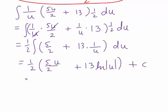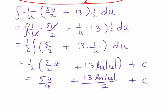We could tidy that up by expanding the brackets. So 1 half times 5 divided by 2 times u, that's 5u divided by 4. This next expression, 1 half times 13 ln u, is just 13 ln absolute value of u divided by 2 plus c.